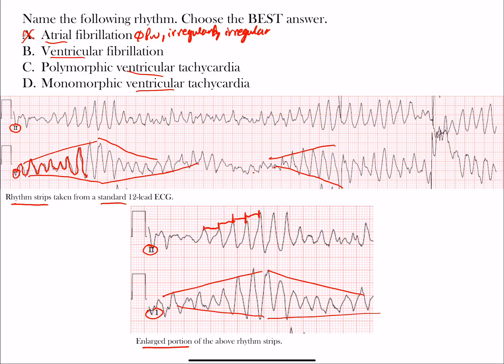Ventricular fibrillation is a tricky one because if you look here, it kind of looks like these are all fibrillatory waves. Looking below, you may see more consistency, but some of these look like they may be almost imitating ventricular fibrillation. When we look at the whole rhythm and choose the best answer, ventricular fibrillation is not correct here. With ventricular fibrillation, you just have fibrillatory ventricular waves but no clear QRS complexes being formed. So V-fib is not correct either.